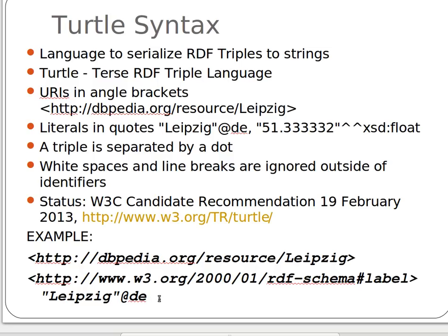That's the value, and that's the dot that ends the triple. So this is a triple: the subject is a URI, the predicate is a URI, and the value is a literal value. Of course we can use prefixes to make this shorter, as we'll see in the upcoming video.